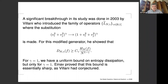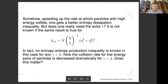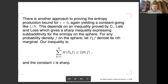When you speed up the rate at which high-energy particles collide, one gets a better entropy dissipation inequality — but does one really need the extra one? If you go back to the physically scaled rates, adding the plus one breaks the scaling. With proper scaling, no entropy production inequality is known except for gamma equals zero, where adding one or not doesn't matter because you already have a one. So a key problem is: can one get rid of this one? Are there entropy production inequalities with proper scaling? None of the existing proofs accomplish that.